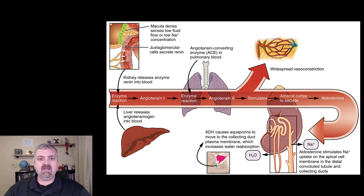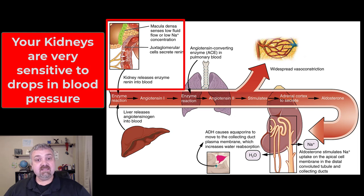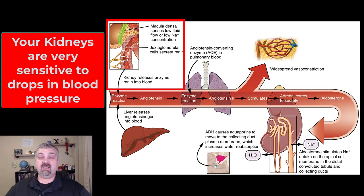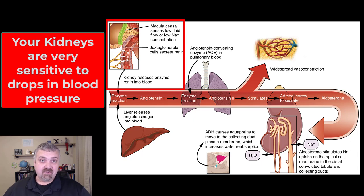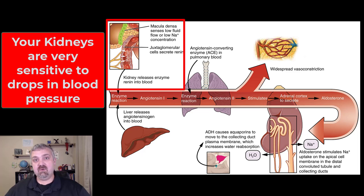Starting on the left-hand side, the macula densa — specialized cells in the kidneys — sense low fluid flow, low blood flow, or low sodium concentration. This is a big deal because your kidneys are a filter and they need hydrostatic pressure to work; they need the pressure of fluid flowing through them. A 20% drop in blood flow through the kidneys would cause the glomerular filtration rate, or GFR, to basically become zero — the kidneys would quit working.